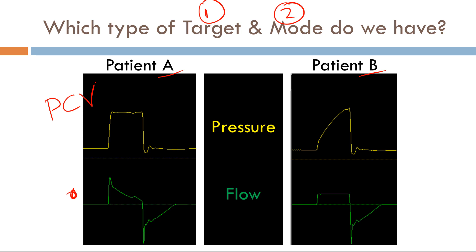Contrasting that with patient B — what's the target variable? Again, my eyes go straight to flow. This looks very constant, very consistent, like something I've set. That is my independent variable, so flow is my target variable. What mode of ventilation uses flow as a target variable? Volume control ventilation.